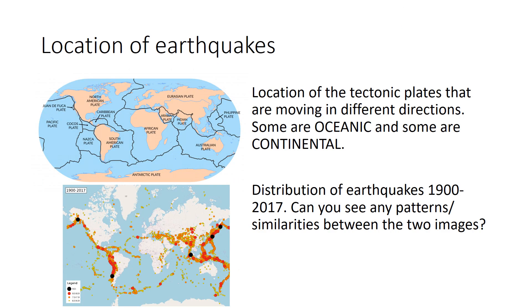We know from our first lesson that the Earth is split into tectonic plates — 15 large ones and over 20 small ones. The plates are moving very slowly, and where two plates meet there is a plate boundary. In our first lesson we looked at three different types of plate boundary: constructive, destructive, and conservative. The different plates are either oceanic crust or continental crust.